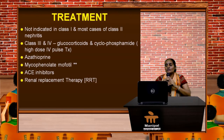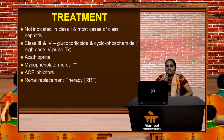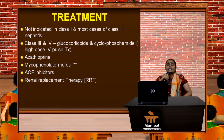Specific treatment by SLE class: not indicated in Class 1 and most of Class 2, but Classes 3 and 4 require corticosteroids, cyclophosphamide, azathioprine, or mycophenolate mofetil. In Malaysia, ACE inhibitors are also used for renal protection, along with renal replacement therapy as needed.